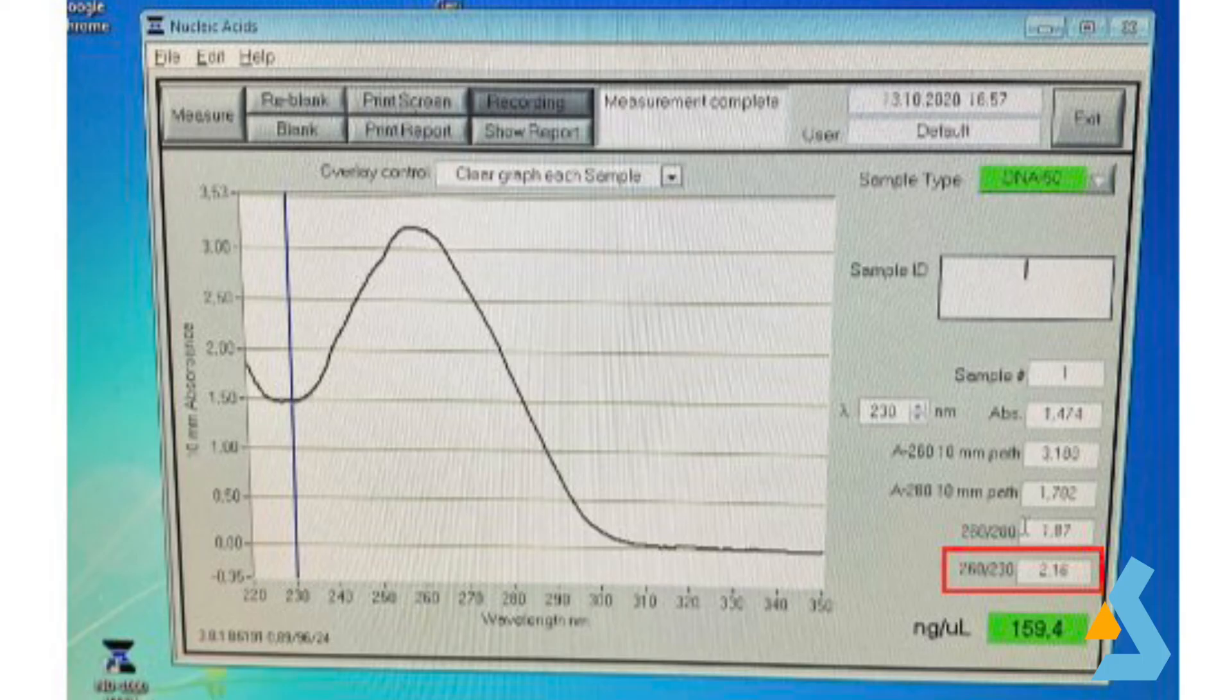The second one is 260 to 230 ratio. This ratio is used as a secondary measure of nucleic acid purity. Expected 260 to 230 values are commonly in the range of 2 to 2.2. If the ratio is appreciably lower than expected, it can also indicate the presence of contaminants.